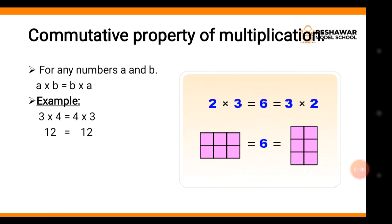Right side کا diagram آپ لوگ دیکھ سکتے ہیں۔ یہ 2 multiply 3 ہے — ہم نے 3 boxes کو 2 times لیا ہے left side پہ، تو total boxes جو ہیں وہ 6 آتے ہیں۔ جبکہ right side پہ ہم نے two boxes three times لیا ہوا ہے تو بھی total number of boxes 6 بن جاتے ہیں۔ تو ہم اگر ان کی shape یا places change کر لیں تو بھی same result ہوگا — this is the commutative property of multiplication.